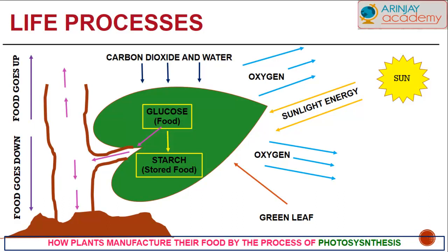As shown on the left-hand side, food goes down to the roots, and then food goes up through the shoots to the other parts of the plant's body. The glucose can be further broken down, and that food is stored in the form of starch within the plant's leaf. It can also be stored in the stems, shoots, or even the roots.